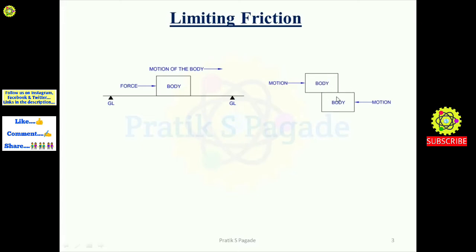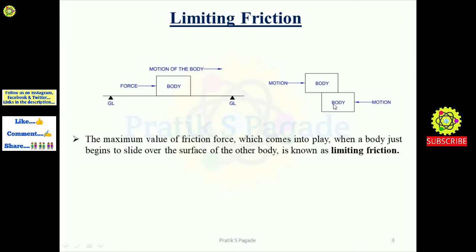Here is another example with two bodies. When we apply a rightward force on the upper body and a leftward force on the lower body, for some range both bodies remain stationary. After the maximum frictional force is attained and exceeded, the bodies start to slide over each other. The point at which the bodies begin to slide is known as limiting friction — the maximum value of friction force when a body just begins to slide over the surface of another body.